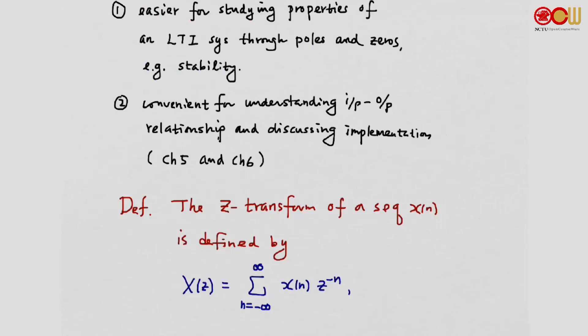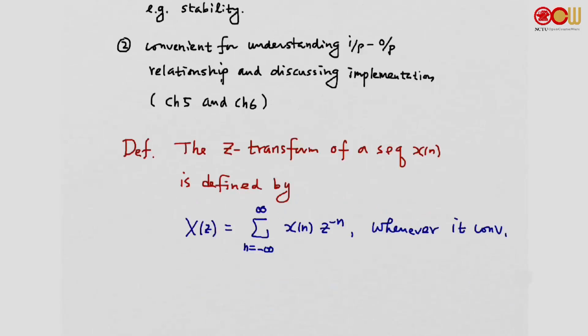The Z-Transform of a sequence x[n] is defined as X(z) equal to the summation from n equals minus infinity to infinity of x[n] z to the minus n, whenever it converges. The variable z is a complex number.